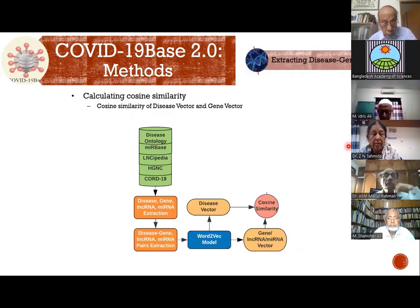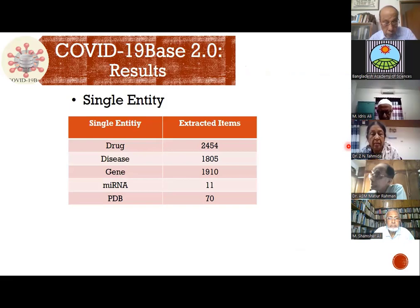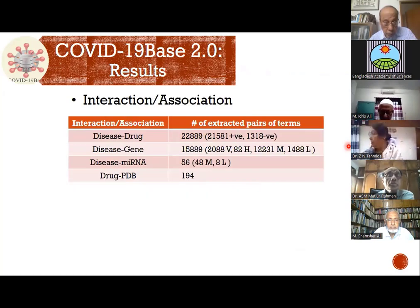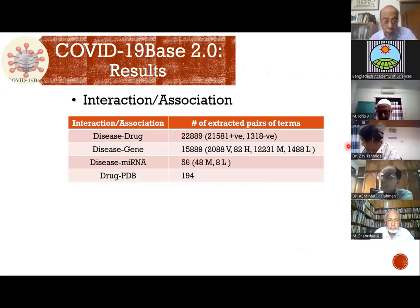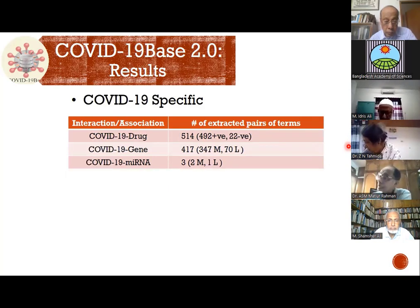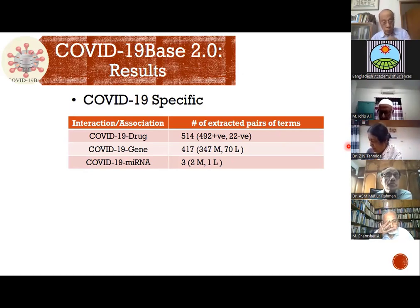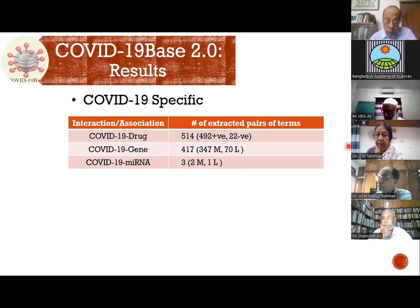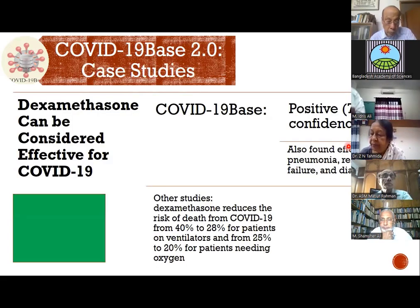We ran a similar pipeline for disease-gene associations. Results: we identified more than 2,000 drugs for 1,800 diseases; more than 1,900 genes; and 22,889 disease-drug associations — of which over 21,000 were positive and 1,300 were negative. For COVID-19 specifically, published in early 2020, we found 514 drugs related to COVID-19, of which 492 were positive and 22 were negative, along with associated genes and miRNAs.